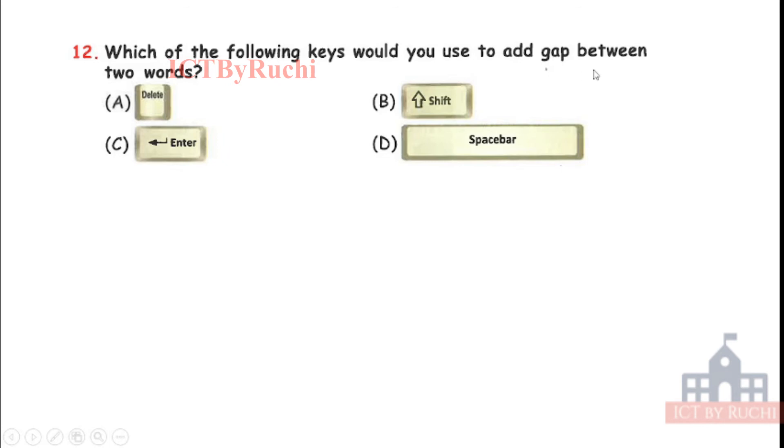Which of the following keys would you use to add gap between two words? We want to give some gap, we want to give some space. A, delete. B, shift. C, enter. D, space bar. Tell me the answer. Answer is D, space bar. Enter is used to coming next line. Delete is to deleting. And shift is used to typing capital, small or other work.